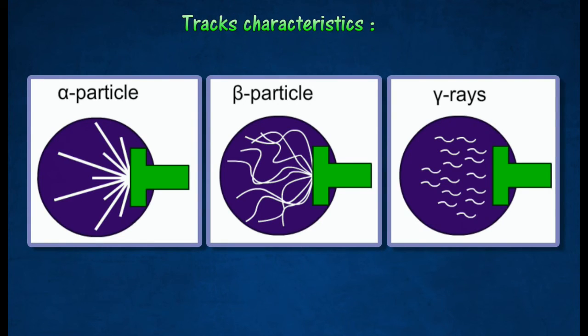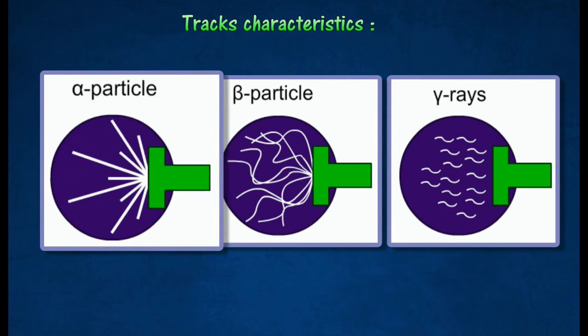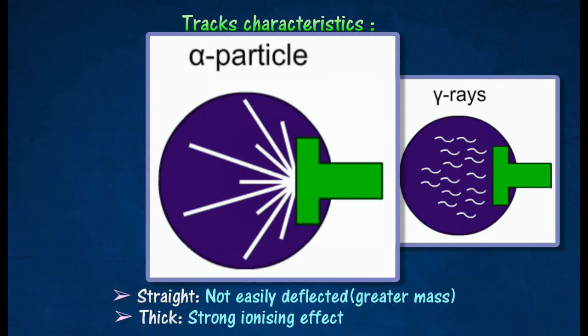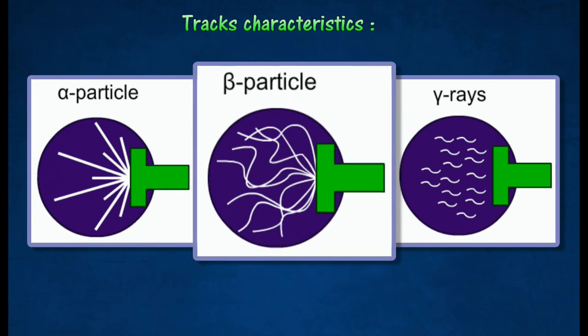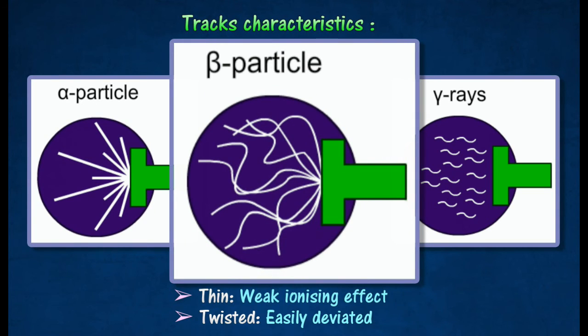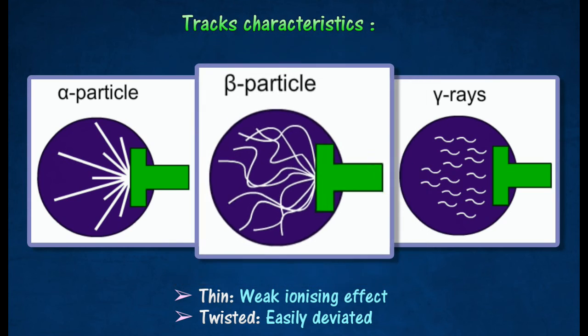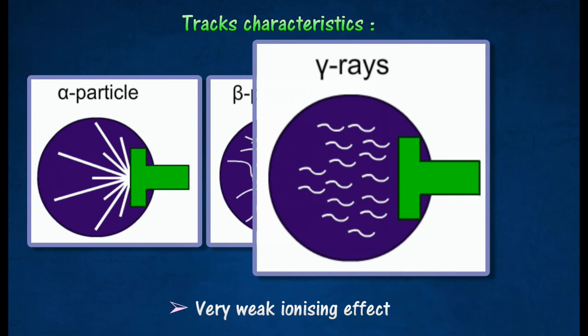Alpha particles produce straight, thick tracks which are about the same length. Beta particles produce thinner and twisted tracks. Gamma rays produce thin, short, and irregular tracks.